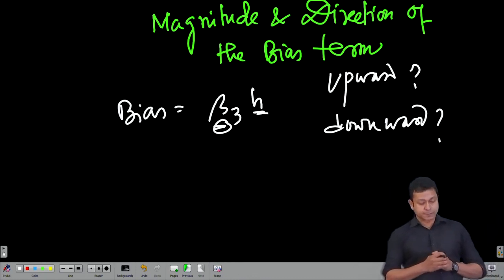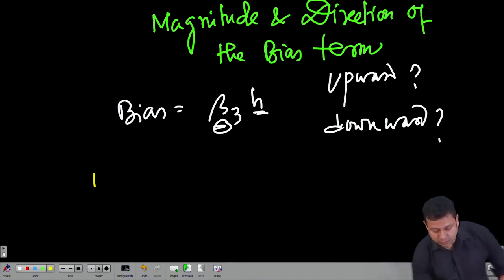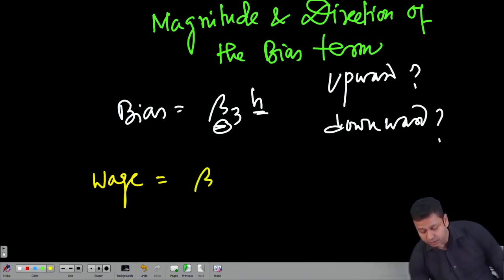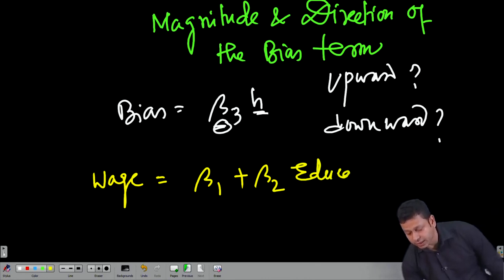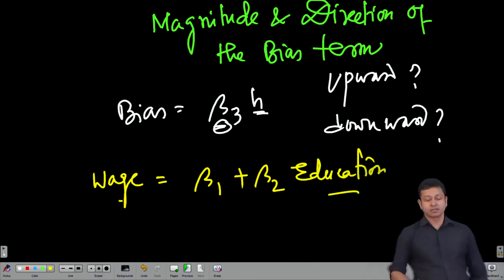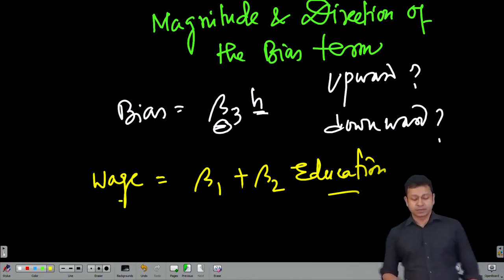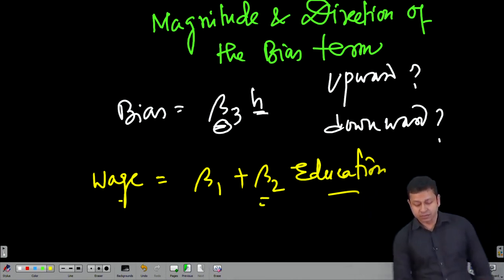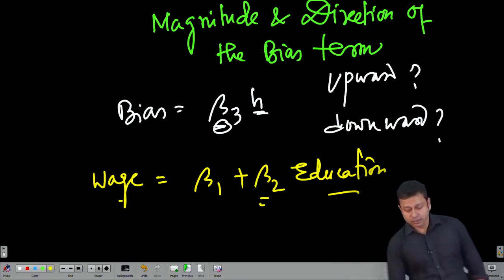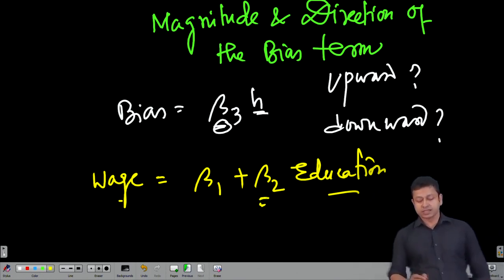Let us say we are talking about wage, and we have the equation β₁ + β₂ × education. We know that education has a positive correlation with wage — so β₂ is going to be a positive regression coefficient.